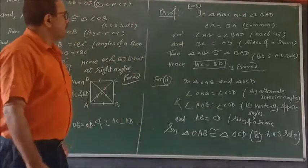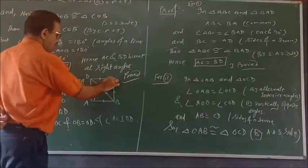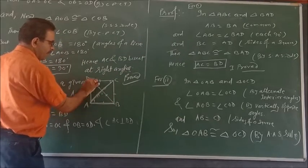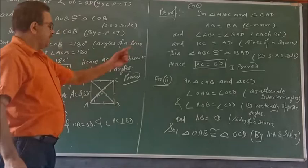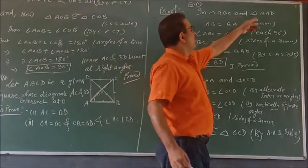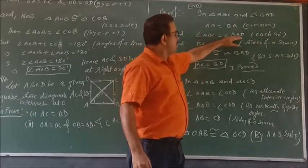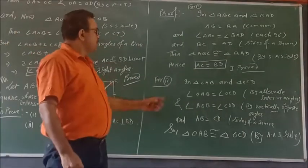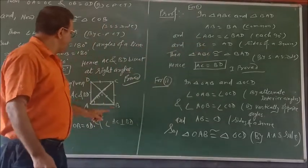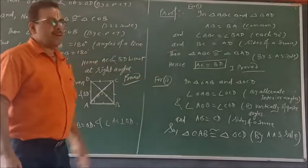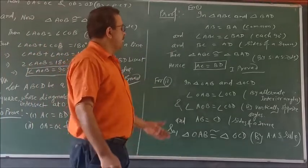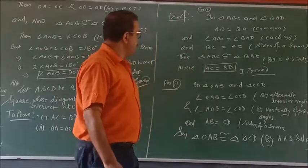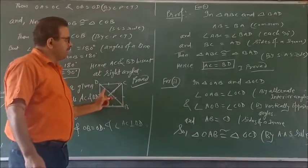See in your triangle ABC and triangle BAD, we get AB equal to BA, common side. And again, angle ABC equal to angle BAD, it's 90 degrees by the help of square. And in your third part, we have BC equal to AD, sides of a square. We know that all sides of a square are equal to each other. So triangle ABC congruent triangle BAD by SAS rule. And for the first result, AC equal to BD by CPCT. Hence first proved.